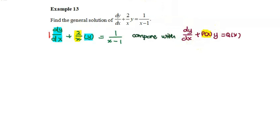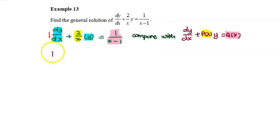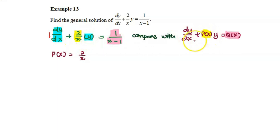And the function 1 over x minus 1 can be compared with Q(x). So now we can conclude that P(x) is 2 over x as the coefficient of y, and Q(x) is 1 over x minus 1. We have settled our first step.